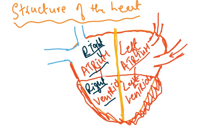Sometimes babies are born with a hole in the septum. It's actually a flap which doesn't close — it's present before birth because the lungs of the baby don't work, so blood is diverted from the right to the left side. Usually when a baby is born this flap closes, but sometimes it doesn't, and we call it a 'blue baby' because deoxygenated and oxygenated blood are mixing.